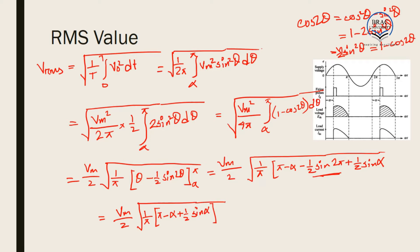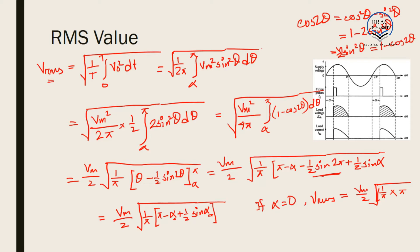We can see that Vrms is dependent on alpha. If alpha equals 0, Vrms equals Vm over 2 times the square root of 1 over π times π — since sin 0 is also 0 — giving Vm over 2, which is the same as the half wave uncontrolled rectifier.